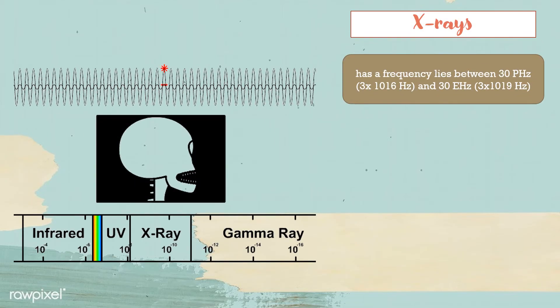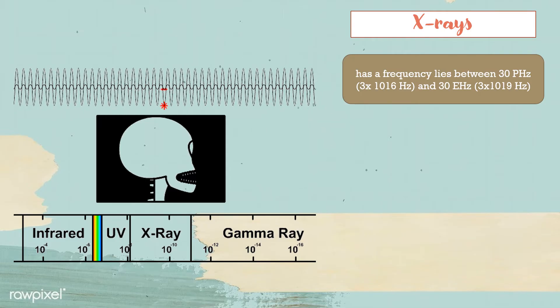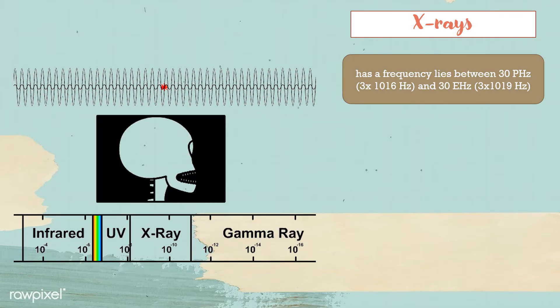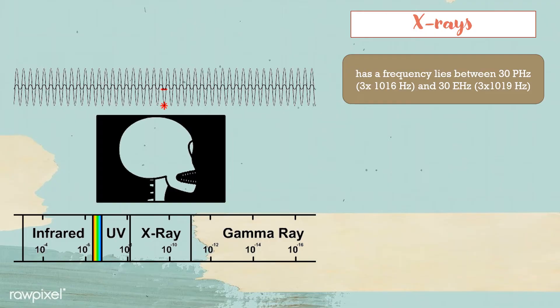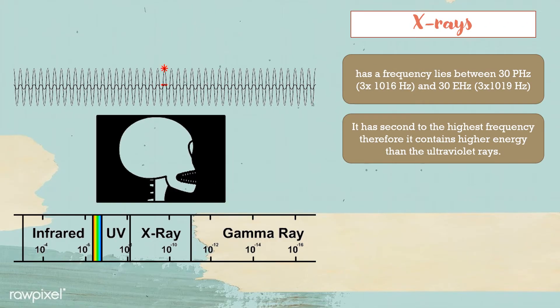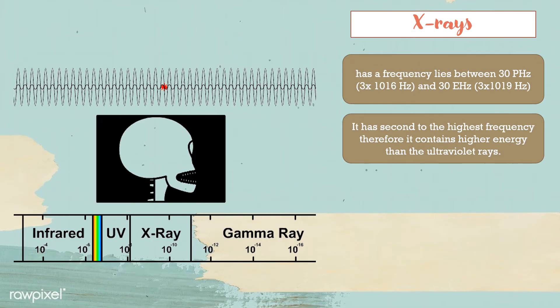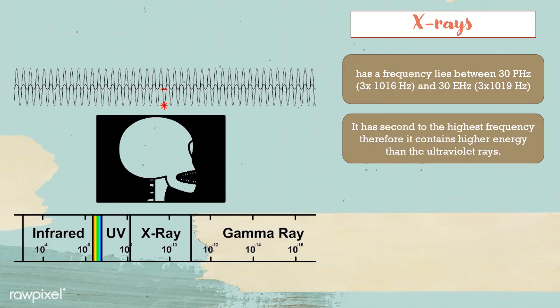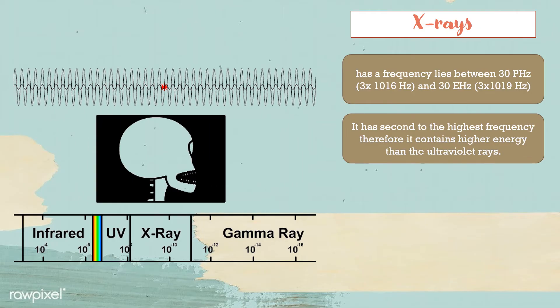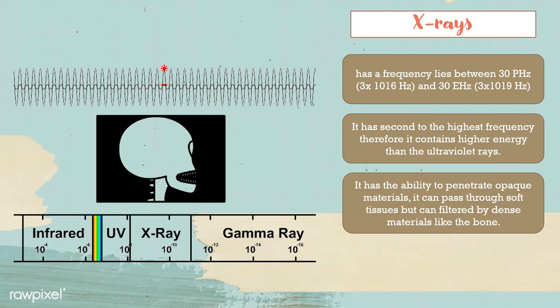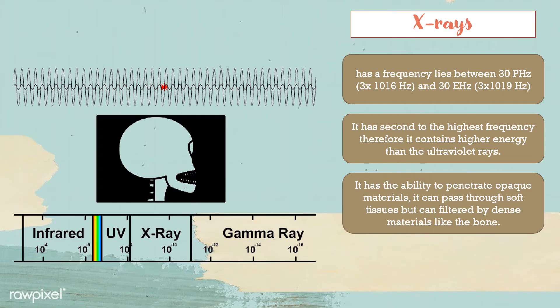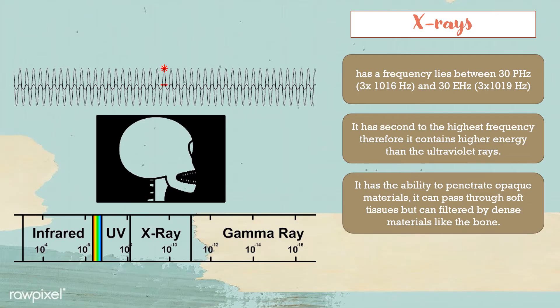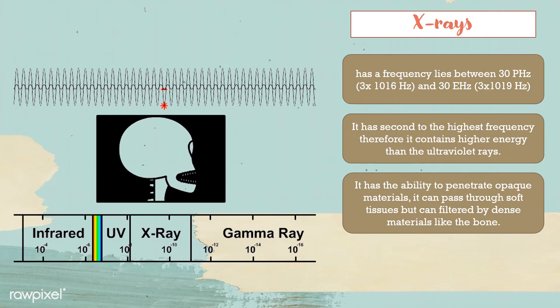The sixth type of EM wave is X-rays. Has a frequency lies between 30 petahertz or 3 times 10^16 hertz and 30 exahertz or 3 times 10^19 hertz. It has second to the highest frequency therefore it contains higher energy than the ultraviolet rays. It has the ability to penetrate opaque materials. It can pass through soft tissues but can be filtered by dense materials like the bone.